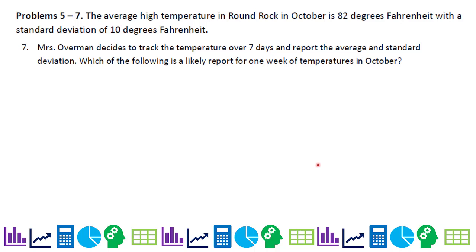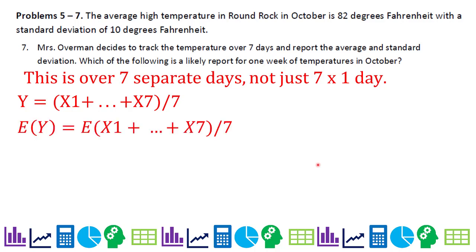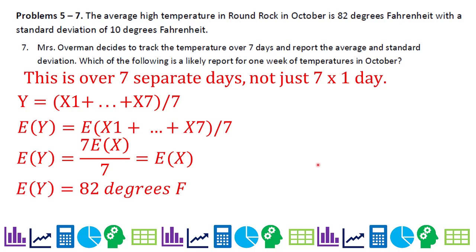Now we track temperature over seven separate days and report the average and standard deviation. Since these are seven separate days — not one day repeated seven times — the behavior changes. The expected value sums x1 through x7, all with the same expected value, giving 7E(x) divided by 7 = 82°F. So the average is still expected to be 82°F.